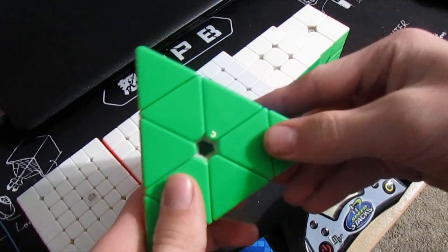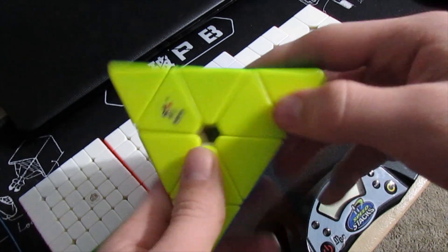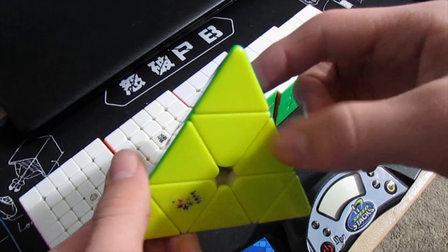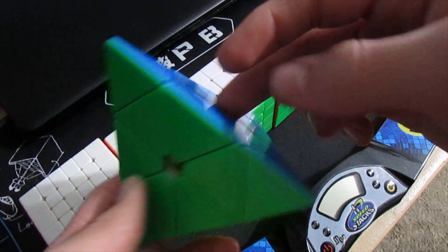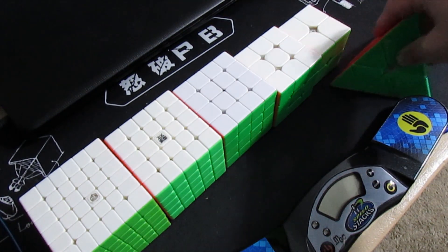Lastly, Pyraminx. I'm using my Yushin Huan Leung M Pyraminx and hoping for a sub-4.5 average. I might not get it though. I just want to get at least one of the rounds, hopefully, because there are two rounds.